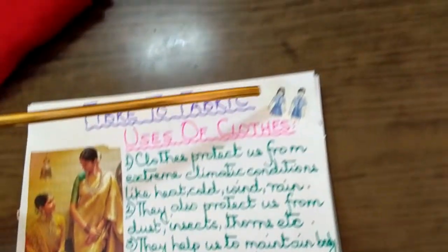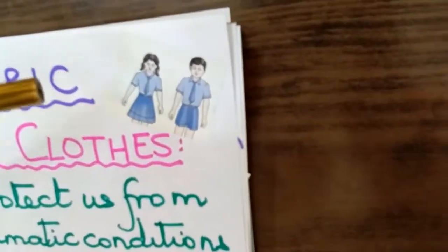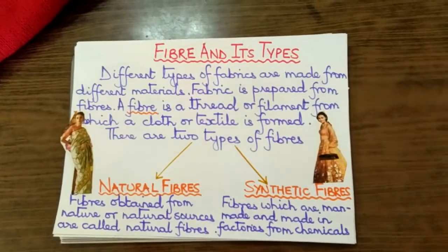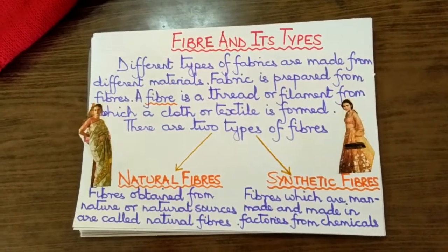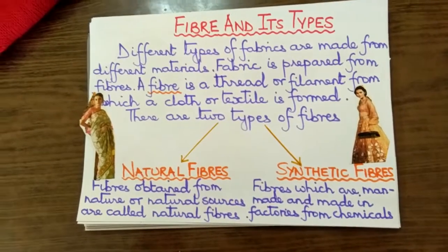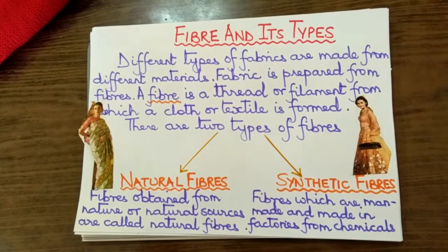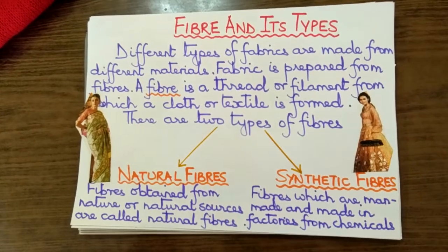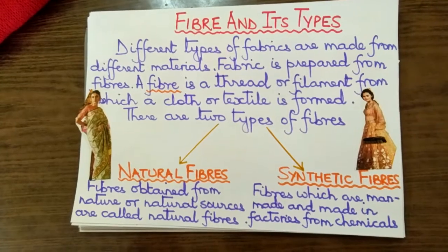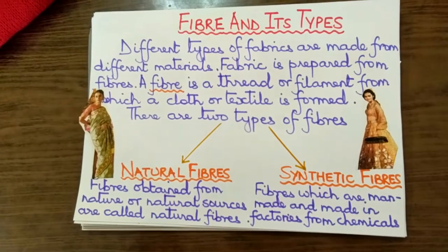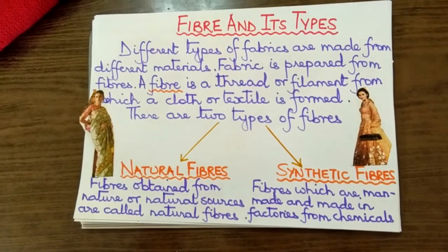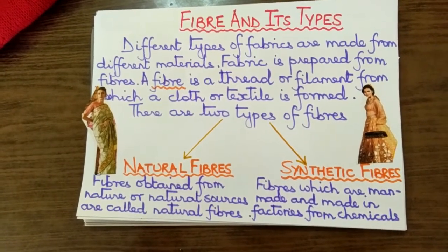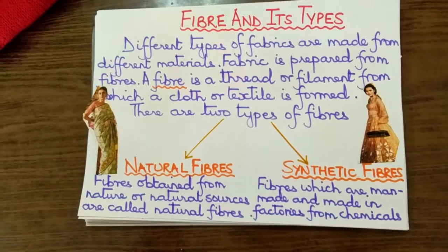Here are some children wearing uniforms. Some clothes tell us about the organization that we are working for or studying in. For example, uniforms worn by the police, army, navy, air force, pilots and air hostesses, and of course school uniforms worn by students like you. When we wear such uniforms, people instantly recognize us, and we leave our language, culture, caste, creed and religion behind and become one.